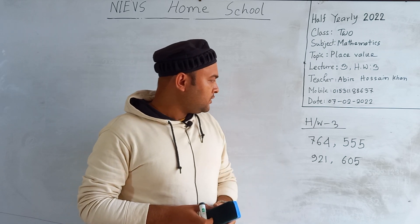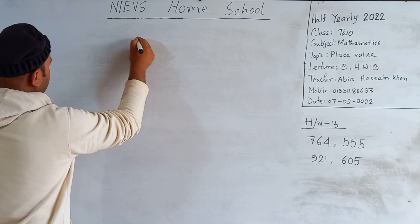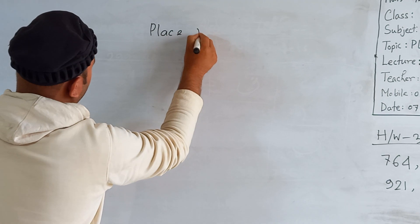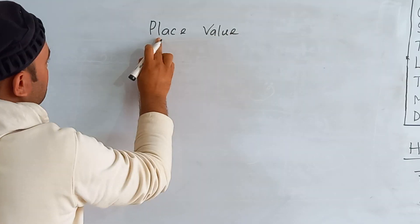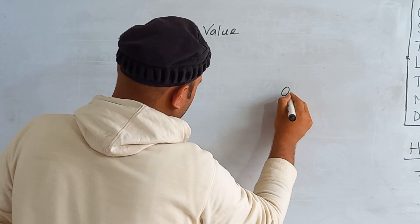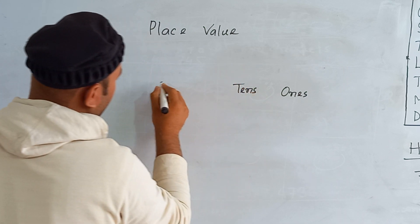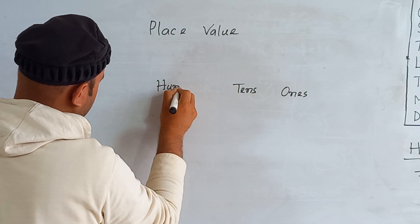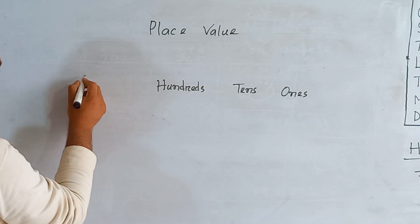It has been corrected now. Let's start our class. Place value means we have to write the place of the specific digits. To know the place value, we need to know: ones place, tens place, hundreds place, and thousands place.